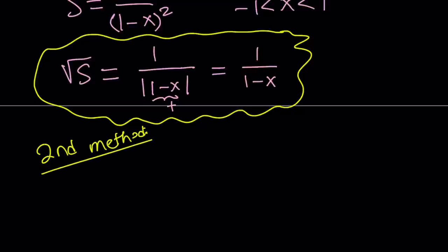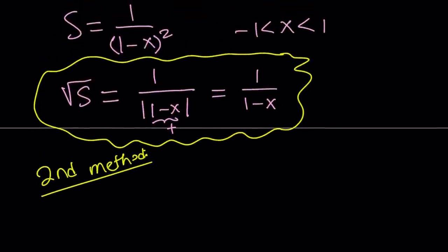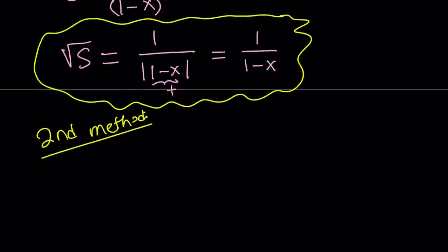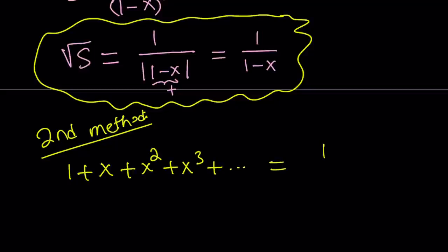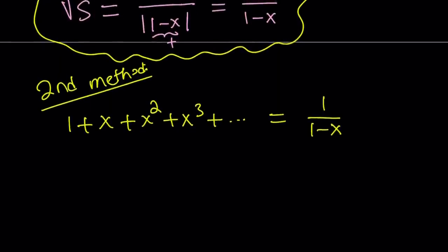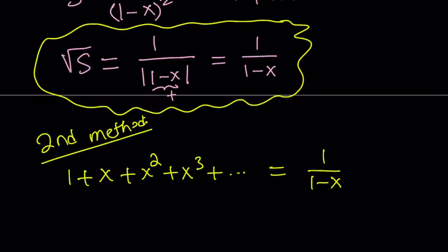Our second method is a little different. To find the square root of this sum, I'm going to try to obtain that sum first from my well-known geometric series. We already talked about this: 1 plus x plus x squared plus x cubed plus so on and so forth equals 1 over 1 minus x, convergent if x is between negative 1 and 1. So this is the sum.